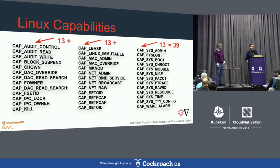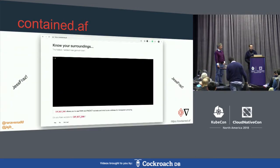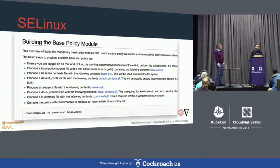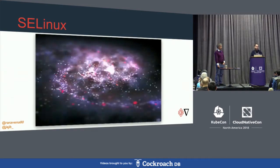There are also Linux capabilities — 39 of them — each with a unique way of isolating or doing different things at the kernel level, requiring significant time to understand. You can try the JZ cells contain that AF game to learn more. Another approach many people use is SE Linux to contain workloads. But you have to compile a base module and it becomes difficult to enable. To me, SE Linux is like a galaxy — all these different options like stars.